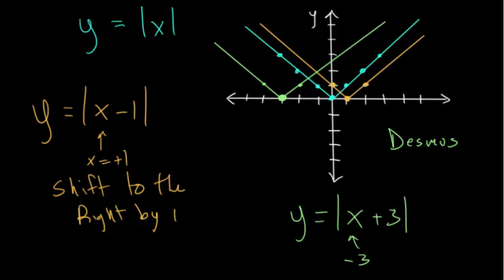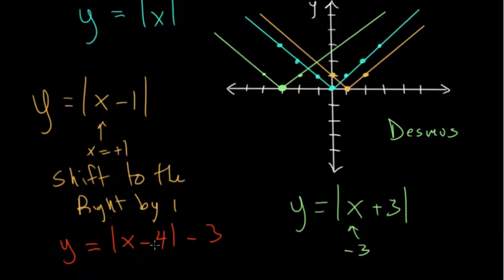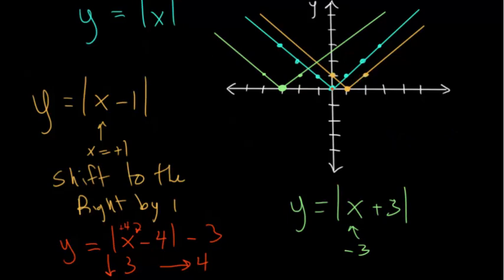You can even combine these ideas. For instance, if we had y equals the absolute value of x minus four, minus three, we're combining two ideas at once. Think about them each separately: the minus three on the outside shifts down three units, and on the inside, positive four is the x value that makes the expression zero, so we go in the positive direction four units.